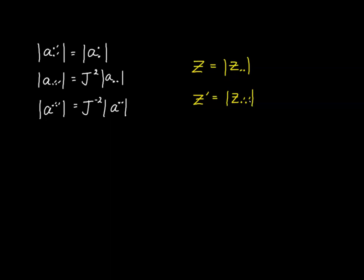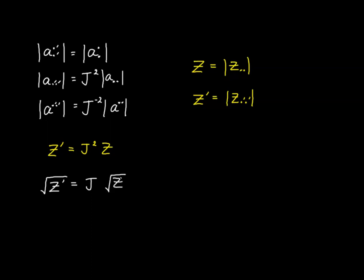That's going to make our syntax much simpler. Using these definitions, we can now say that z prime is equal to J squared times z, because this relationship right here applies to this model right there. Next, we're going to take the square root of both sides of this equation, and we're going to get that the square root of z prime is equal to J times the square root of z. And we call this factor — the square root of z — the volume element.